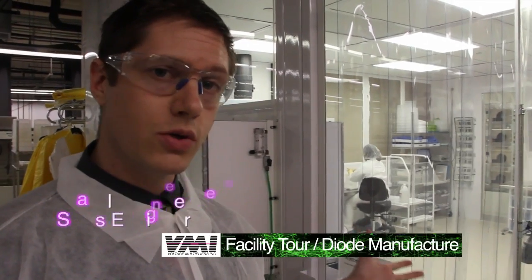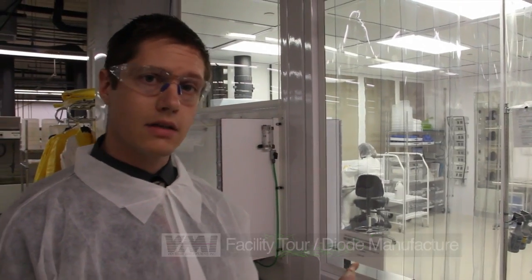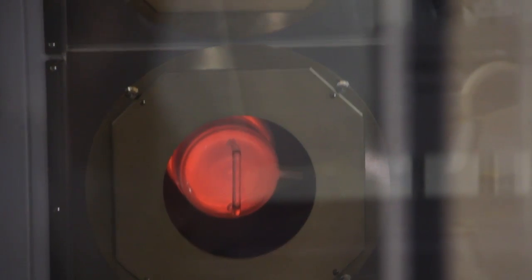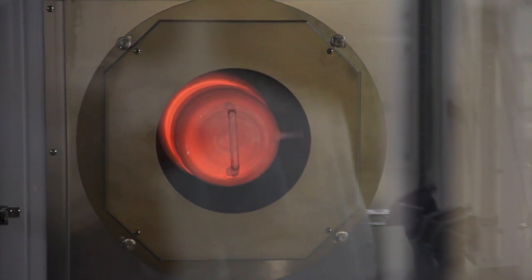So this is the beginning of our process here at VMI. Everything starts with the boron phosphorus diffusion in this clean room. This is a class 10,000 clean room where we diffuse our wafers at extremely high temperature in quartz tubes.